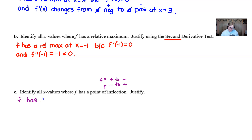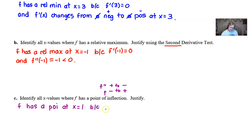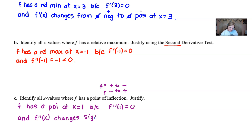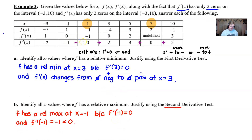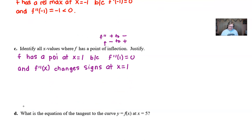So f has a point of inflection (POI) at x equals positive 1. To justify: establish that f''(1) equals zero, and couple that with the fact that f'' changes signs at x equals 1. You can state that f'' is negative to the left and positive to the right of x equals 1 for a more descriptive answer, though a statement that f'' changes signs is generally sufficient.